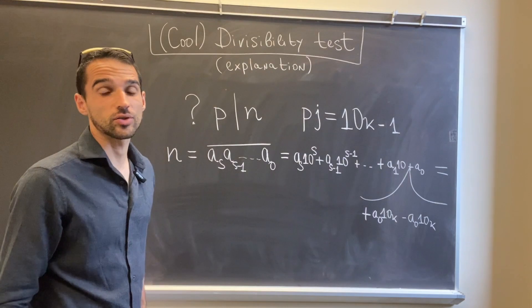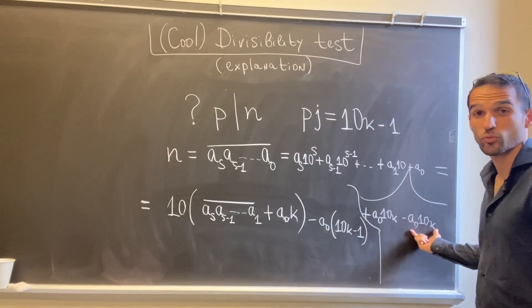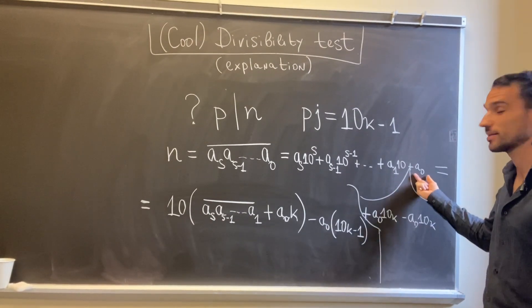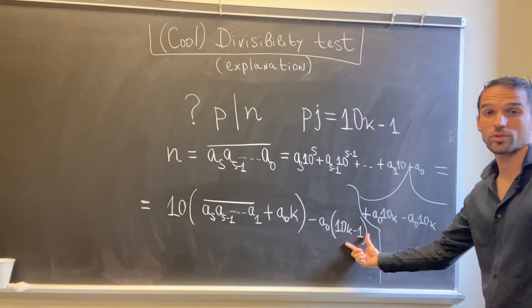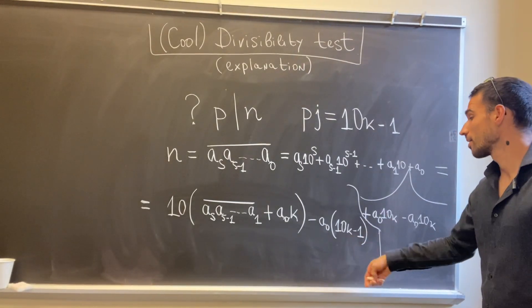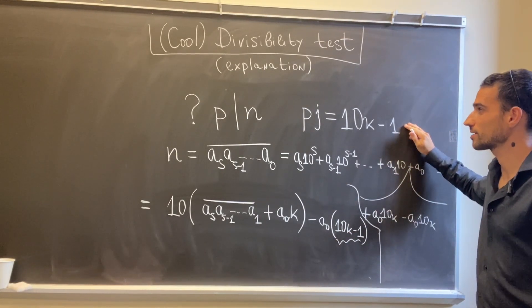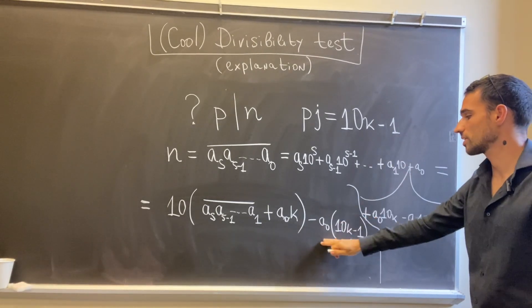How is this going to help? Well, let's see. If we pair up this last term minus a_0 times 10k and this term a_0, we get minus a_0 times (10k minus 1). But 10k minus 1, we know something about this, right? We know that it's a multiple of p.